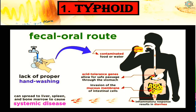The disease spreads by food and water contaminated with feces of the patient. House flies may carry the pathogens from the feces to food, milk and water. The causative organisms enter via mouth, reach the intestine and cause lesions in the intestinal wall.